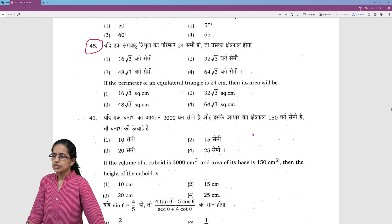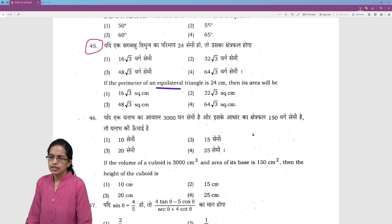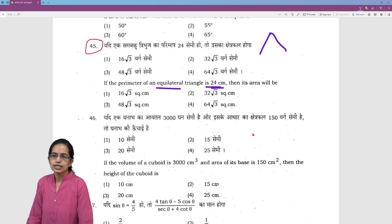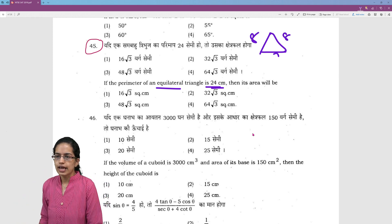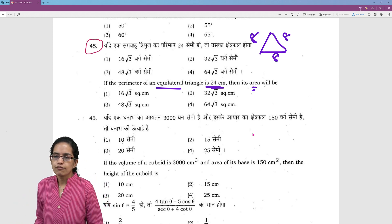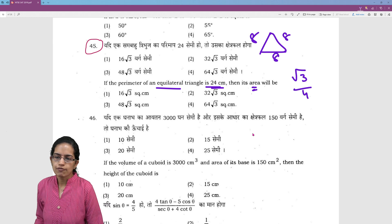Again there are questions where you have the perimeter of an equilateral triangle. Now all the three sides are equal. So 24 is the perimeter that means 8, 8 and 8. Now the formula for the area is root 3 by 4 a square that is side square. So root 3